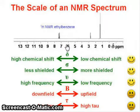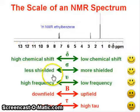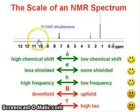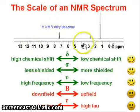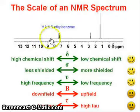Now our focus point: how you remember this scale and some terminology. So this is delta ppm, 0 to 13 and 14. This side is the high chemical shift and this side is low chemical shift. This side is less shielded and this side is more shielded. This side is high frequency and this side is low frequency. This side we call it downfield and this one is upfield. And then tau — this is the low tau and high tau.